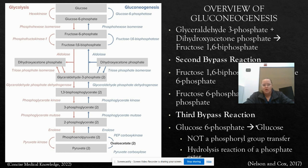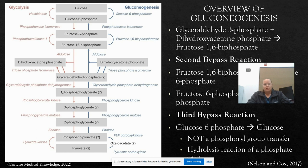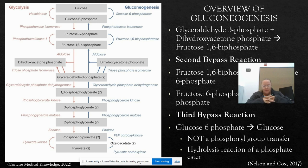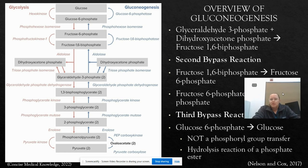Fructose-1,6-bisphosphate is converted to fructose-6-phosphate through the magnesium cation-dependent enzyme fructose-1,6-bisphosphatase, or FBPase-1, which promotes the hydrolysis of the carbon-1-phosphate. Then fructose-6-phosphate is transformed into glucose-6-phosphate using phosphohexoisomerase. The third and final bypass reaction is when glucose-6-phosphate is dephosphorylated into glucose — rather than transferring the phosphoryl group to ADP to form ATP, it undergoes a simple hydrolysis reaction using the enzyme glucose-6-phosphatase to form our glucose molecule.